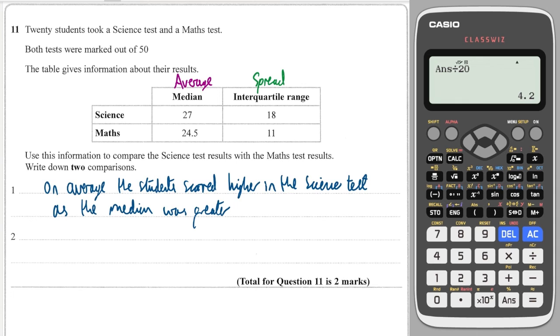So we can say that the results in the science test were more spread out. So again, median is an average, and range or interquartile range is how spread out the data is.